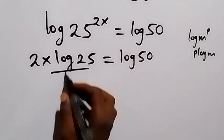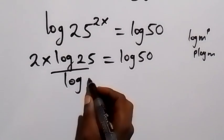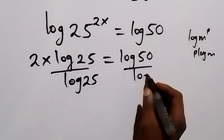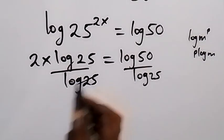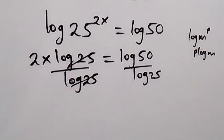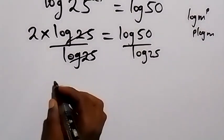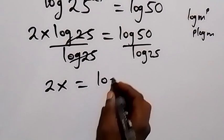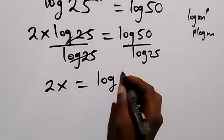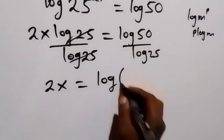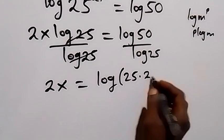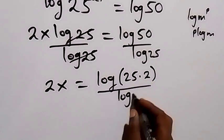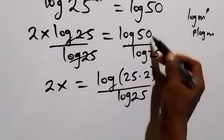In the next step, let's divide both sides by log 25 to remove log 25 on the left hand side. We divide this side also by log 25, and log 25 cancels log 25 here, so we are left with 2x. So we have 2x equals to log 50 over log 25.